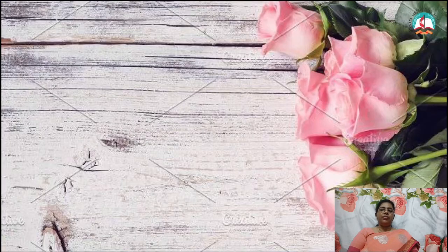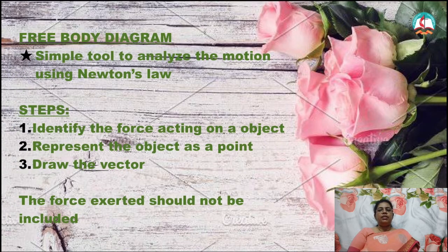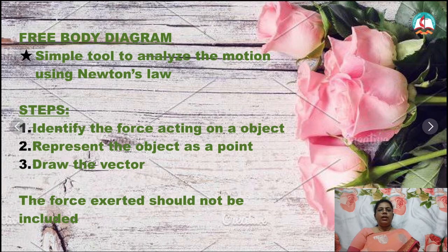Let's see what is a free body diagram. It's a simple tool to analyze the motion of the object using Newton's laws. Now let's see the steps involved in it. First, identifying the forces acting on an object. Then, representing the object as the point mass. And finally, drawing the vectors representing the forces acting on the object. While drawing the free body diagram, the forces exerted should not be included.